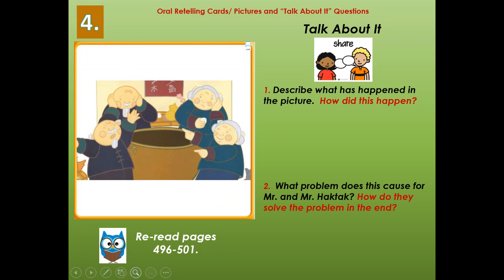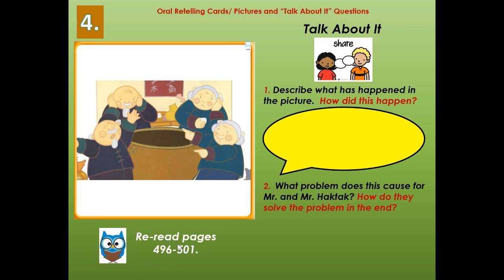Here's our last major event. Look closely at who is in the picture, where are they, and what is happening. You can find that out by re-reading pages 496 to 501. Describe what has happened in the picture and how did this happen? First, Mrs. Hacktack falls into the pot and out pops another Mrs. Hacktack — so there are two Mrs. Hacktacks. Then, Mr. Hacktack falls into the pot and out pops another Mr. Hacktack.